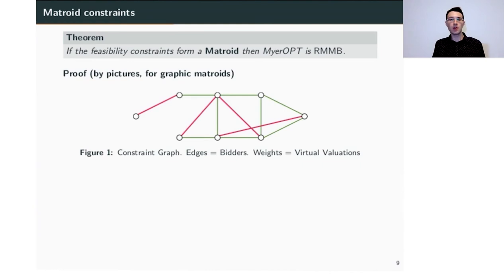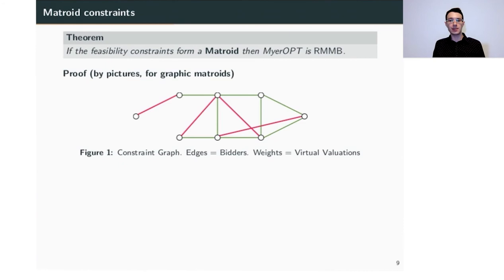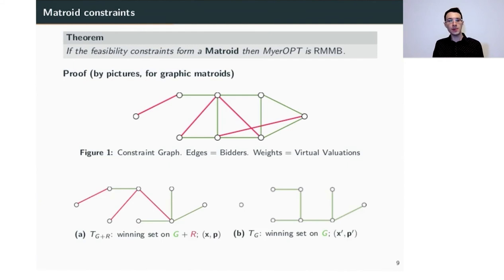In the graphic matroid case, I have a graph where edges are the bidders — some green, some red. They sample their values, submit them to the mechanism, and the mechanism applies functions phi_i to compute virtual valuations, using them as edge weights to compute an allocation maximizing virtual welfare. There are two mechanisms of interest: mechanism x, p runs on all bidders and finds the subset maximizing virtual welfare; mechanism x prime, p prime does the same but only on the green bidders. I show two example solutions on the same set of valuations.